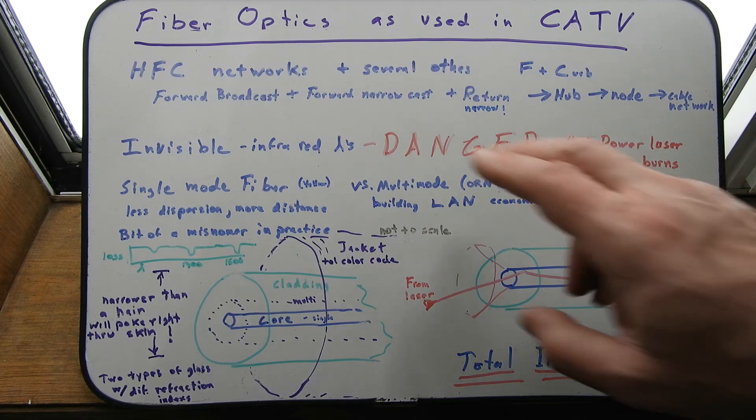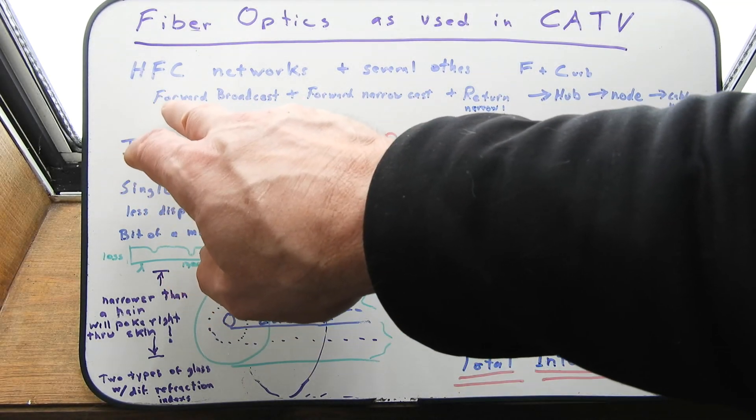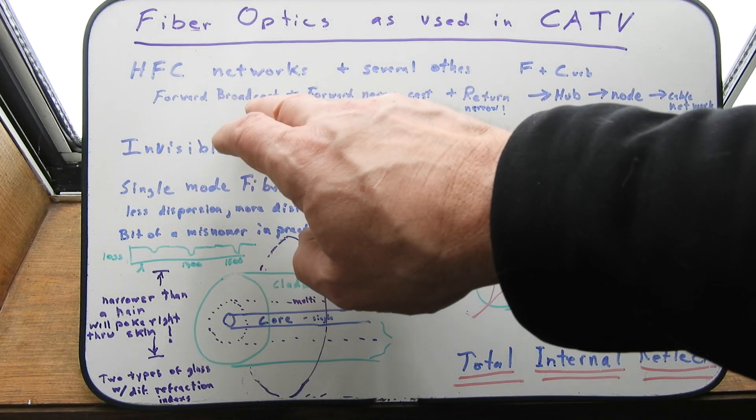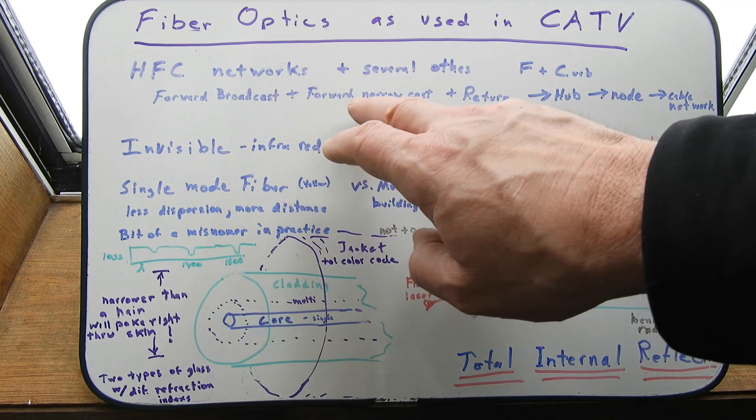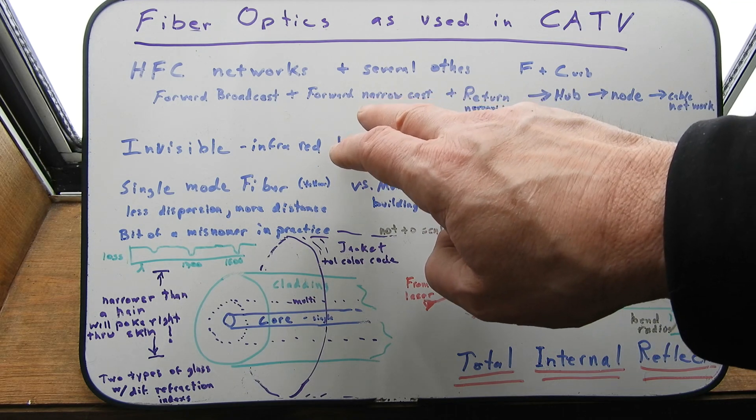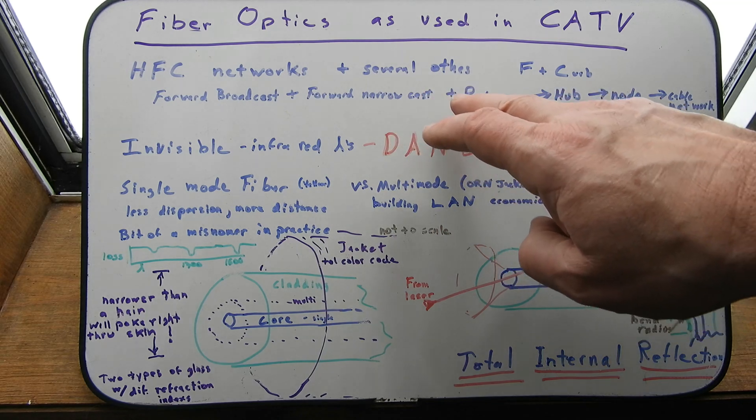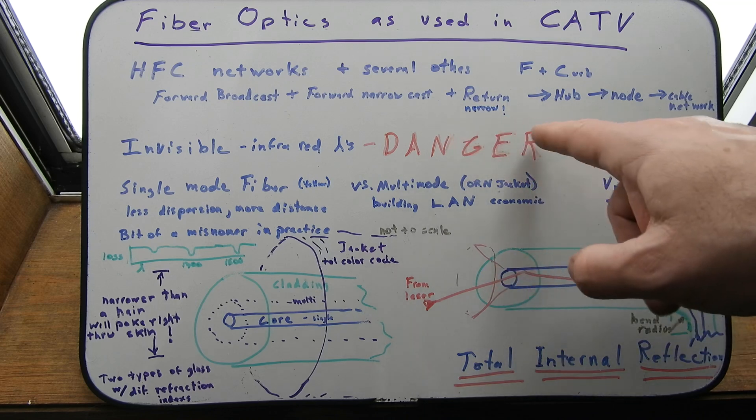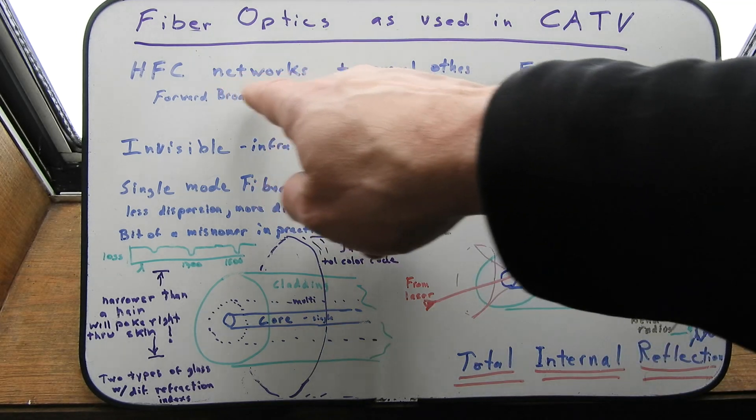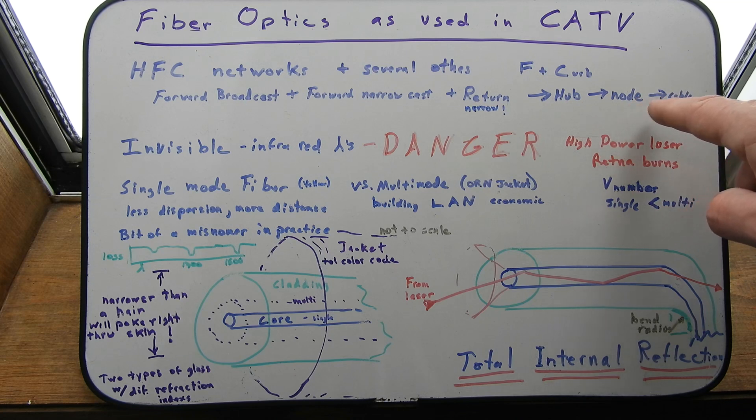Comment a little bit on those. And I talked more about this distribution network on a different video. How we've got actually three signals combined to the customer. You have a forward broadcast, which is your whole cable TV lineup. Your forward narrow cast, which is typically your modem signals. Maybe pay-per-view signals, which can still be video in some cases. And plus return going the other way, which is kind of a narrow cast signal too. Very narrow cast. So, these three signals are combined at the hub and sent out to a node. And then the node feeds the cable network. You know, the old coax.